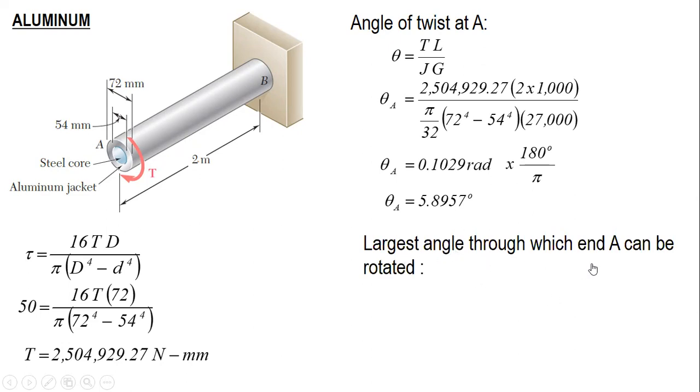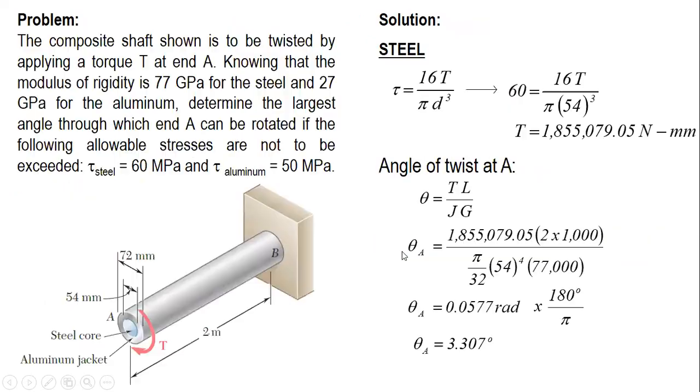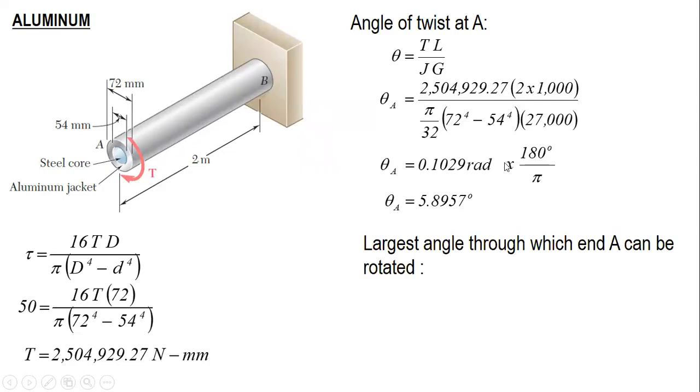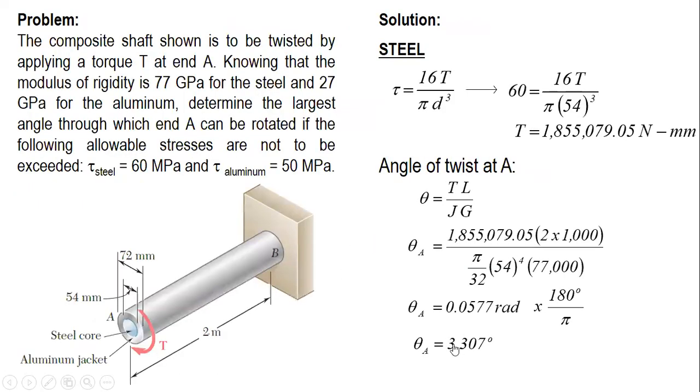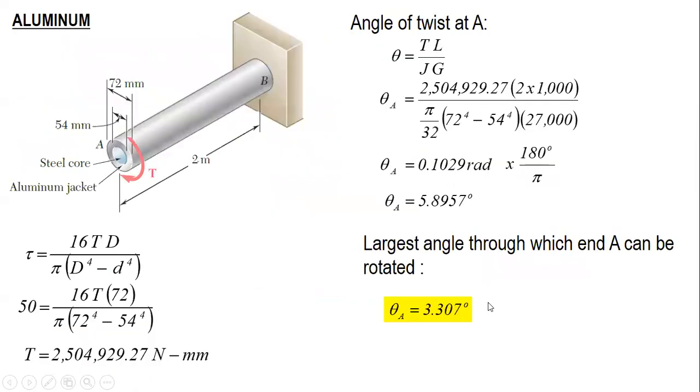The largest angle through which A can be rotated: we choose from the two values, 5.8957 degrees and 3.307 degrees. From the two values, we will select the smallest one. So the largest angle is 3.307 degrees.